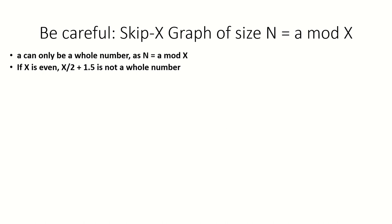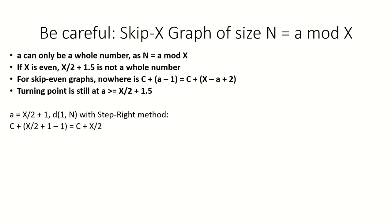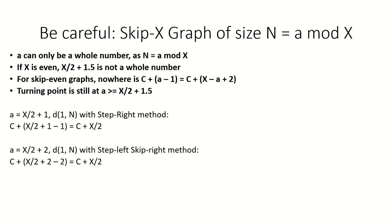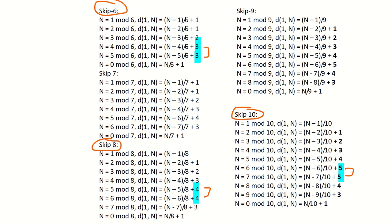When x is even, x over 2 plus 1.5 is not a whole number, meaning that for skip even graphs there is no point at which the two methods are equal. The turning point is still at a equals x over 2 plus 1.5. If we plug in x over 2 plus 1 for a, meaning stepping right is the fastest method, we get a distance of c plus x over 2. And if we plug in x over 2 plus 2 for a, meaning that stepping left and skipping right is the fastest method, we also get a distance of c plus x over 2.